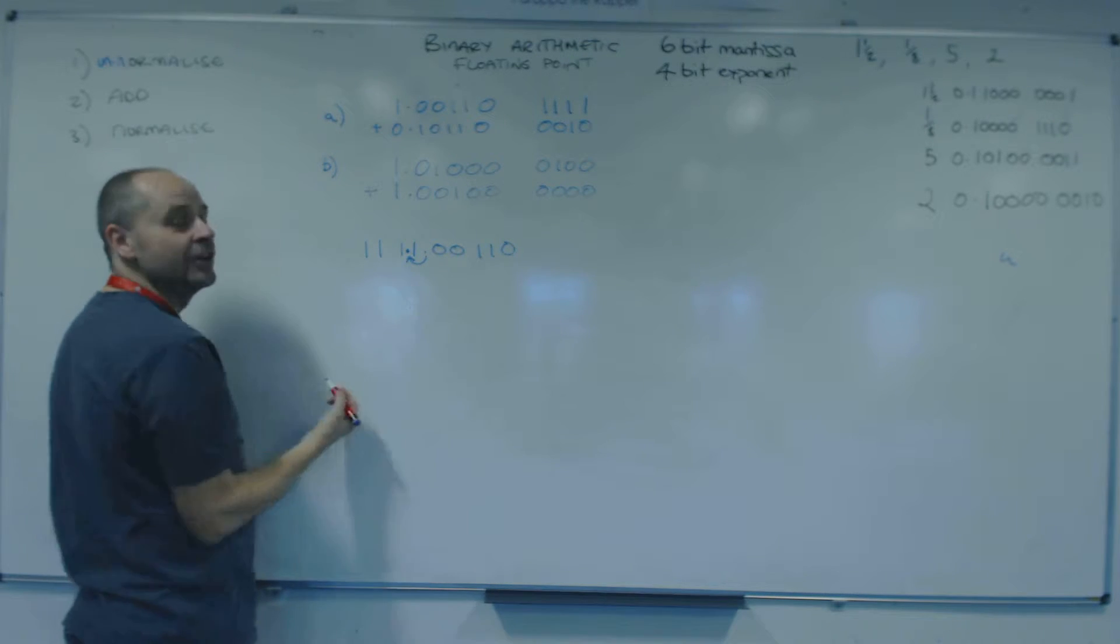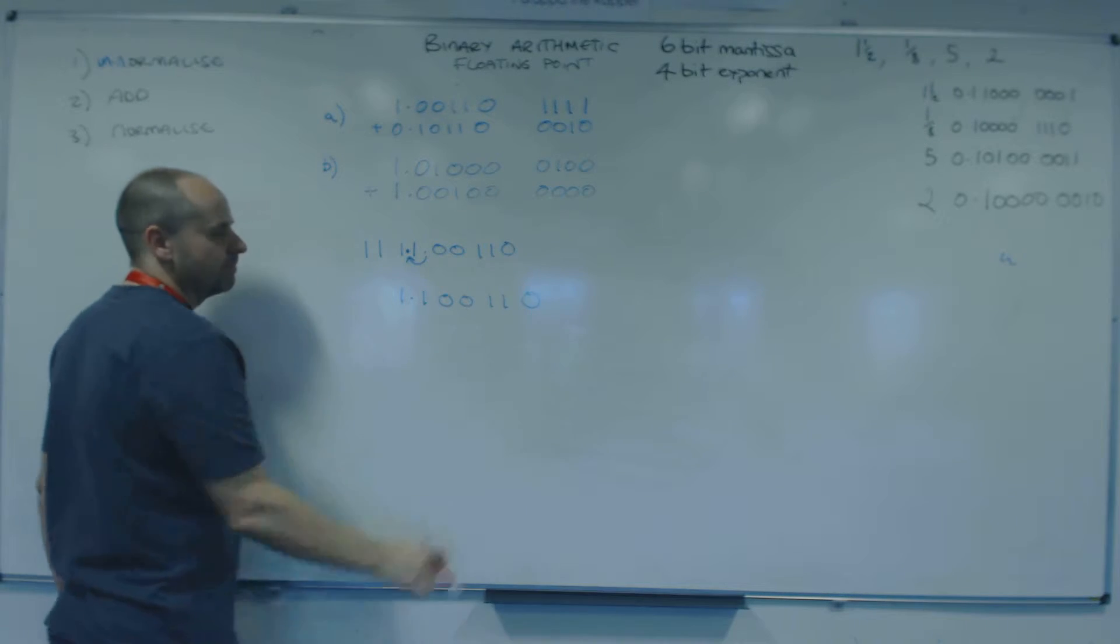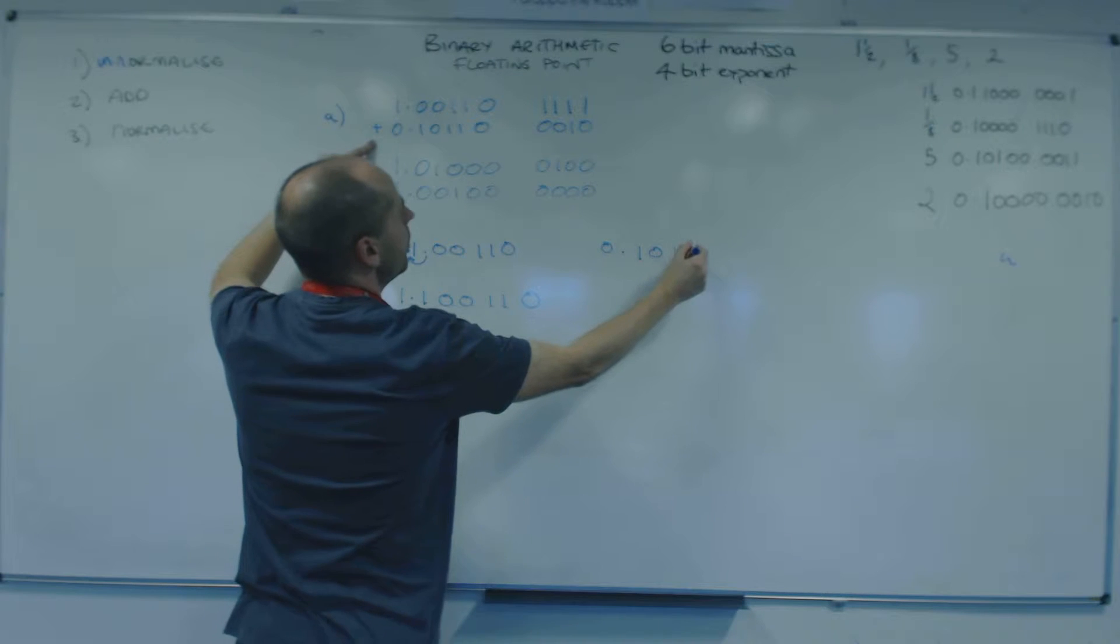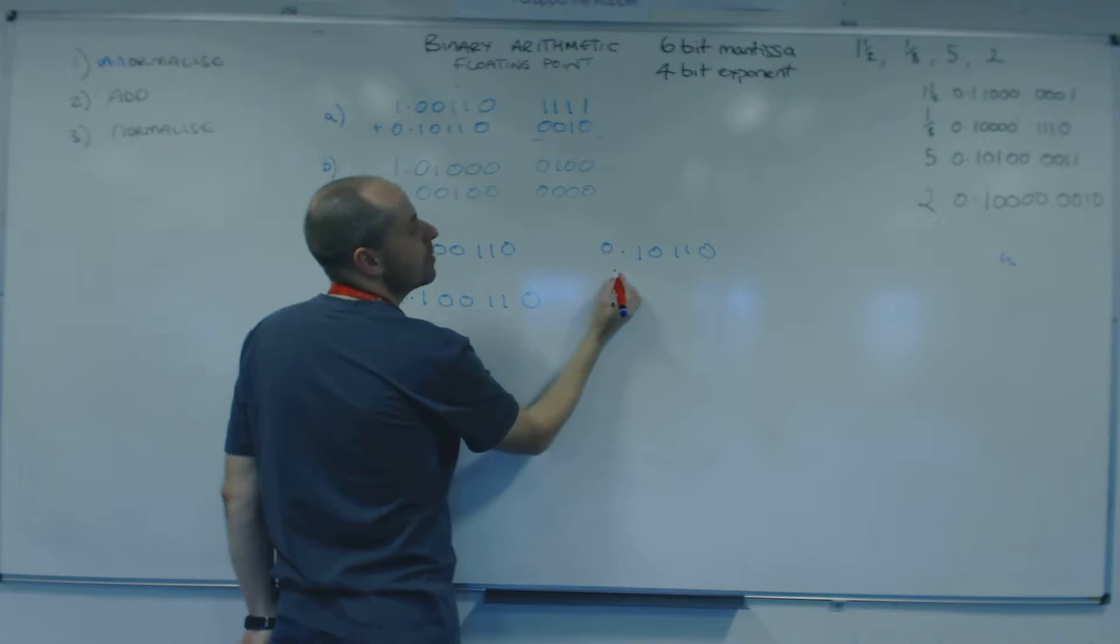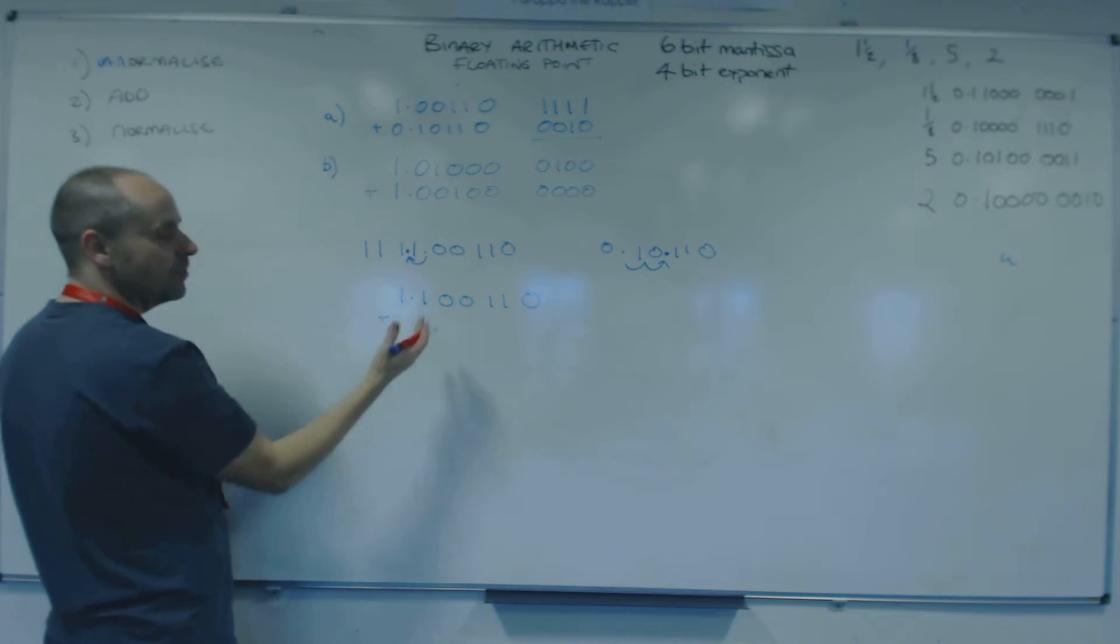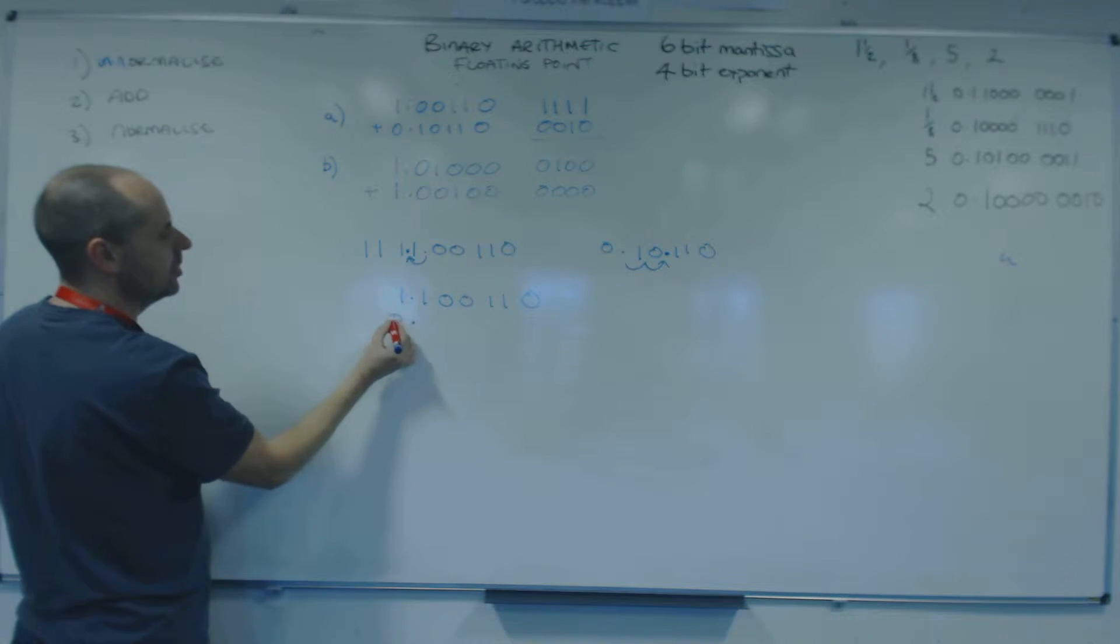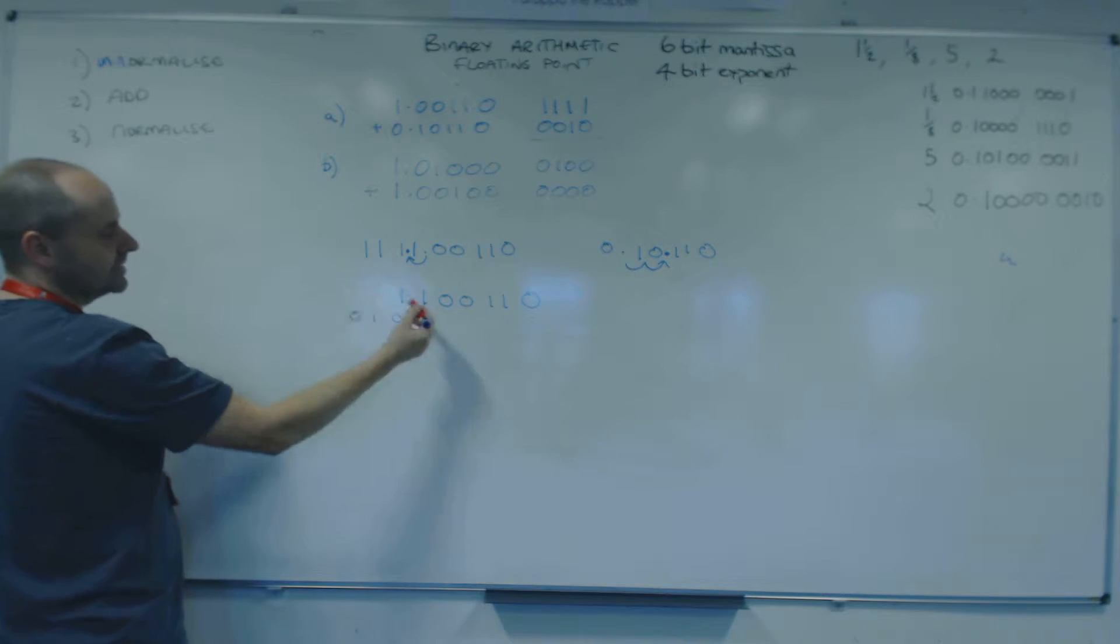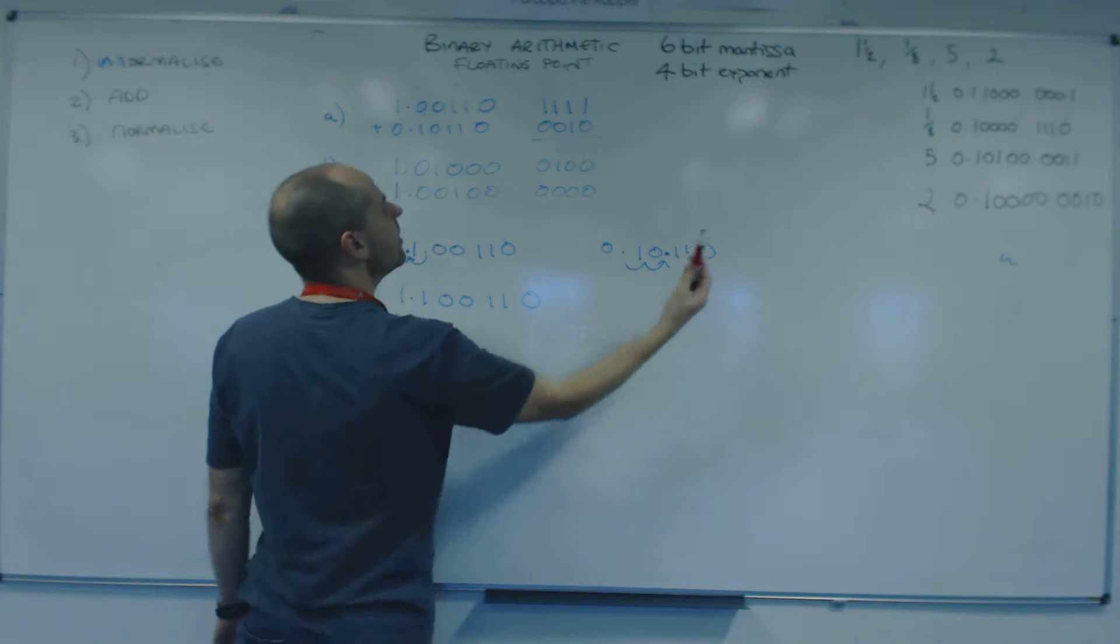We move it to there. So that is the first number we're going to add, 1.100110. The next number was 0.10110 with an exponent of 2. So this is going to get bigger, so we're going to move the binary point that way. 1, 2.